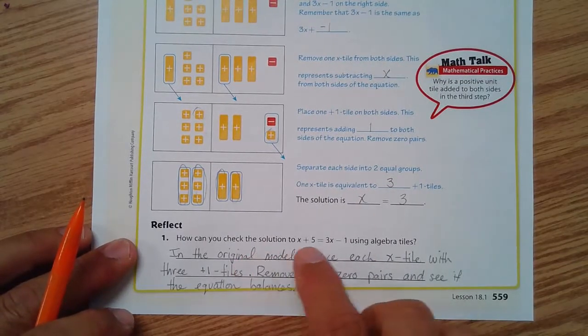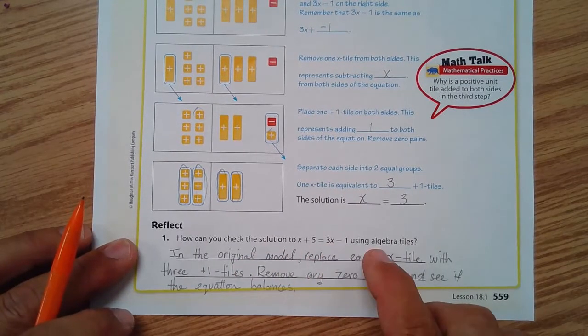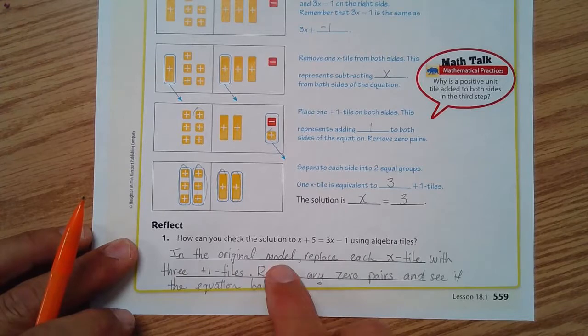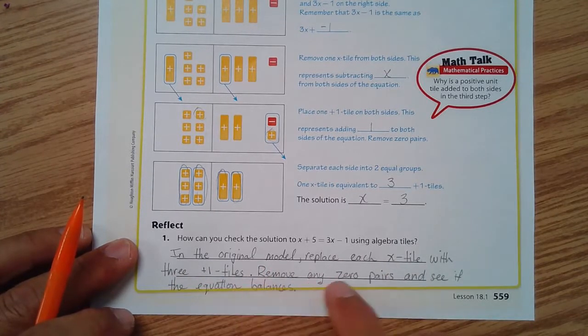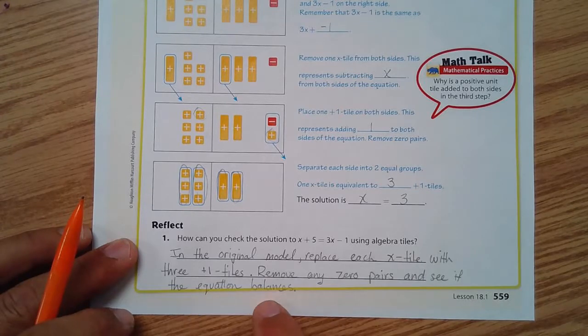How can you check the solution to this equation using algebra tiles? In the original model, replace each x tile with three positive one tiles, remove any zero pairs, and see if the equation balances.